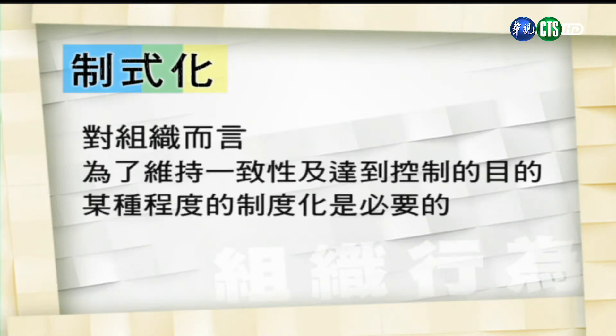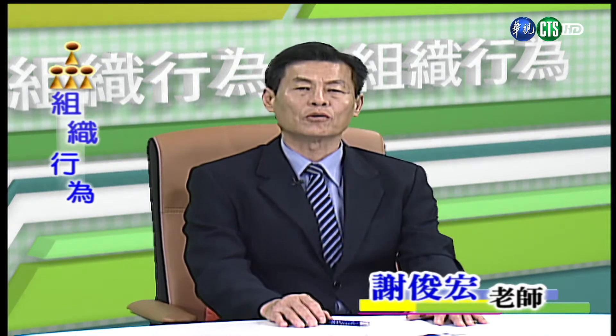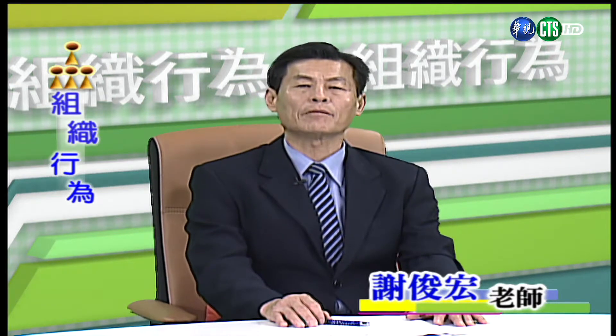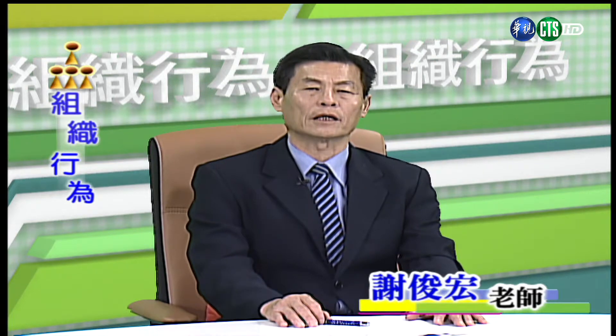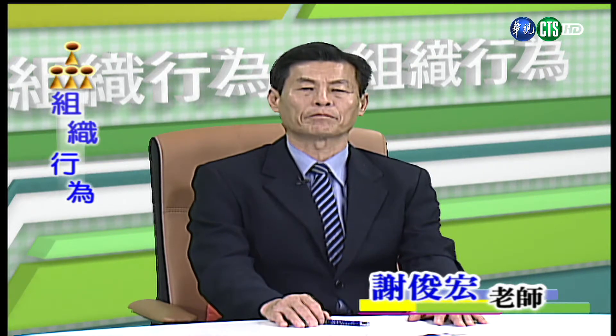员工对于该如何完成工作有较大的自由度。对组织而言，为了维持一致性以及达到控制的目的，某种程度的制度化是必要的。但当制度规定太过严苛时，许多组织会给员工适当的空间，让他们可以根据情况来做适当的判断。